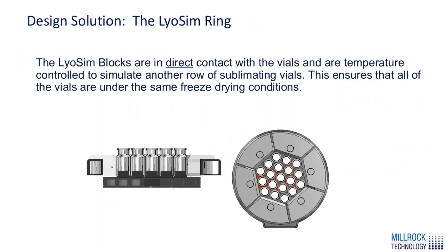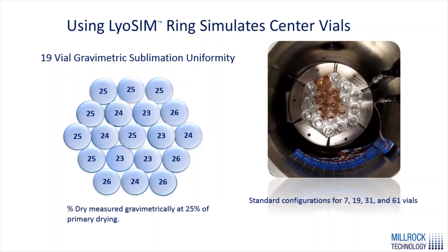The complete design solution is a temperature-controlled LiOSIM ring on the outside of the array, with aluminum blocks resting on the ring that bring it into thermal contact with the array of vials. When we set this ring to track the product temperature during the primary drying phase, these blocks on the outside are at the same temperature as the product in the vials, simulating a wider array. Example test results show percent dried measured gravimetrically between 23% and 26%, well within the range of uniformity seen in a full batch.